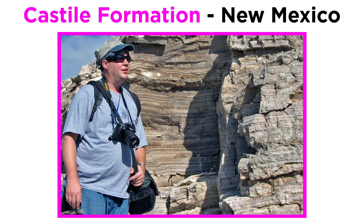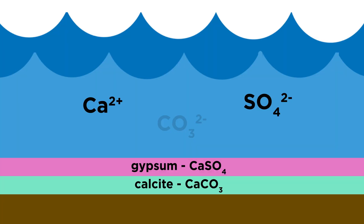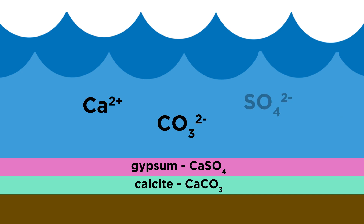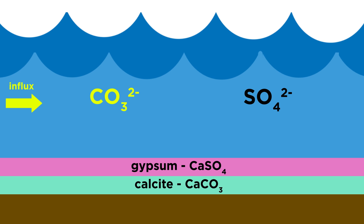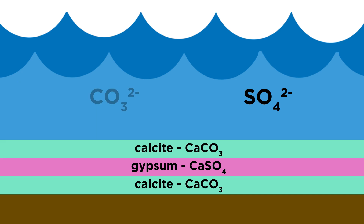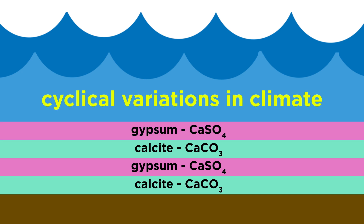Let's now apply this to the Castile formation to explain the cyclic repetition of calcite and gypsum. If we start with calcite, then gypsum would start to form once all the carbonate is exhausted. To start forming calcite again, carbonate would have to be added to the system, which can easily be accomplished by inflow into the basin via rivers and streams. Furthermore, most rivers tend to have much higher amounts of carbonate than sulfate. So each calcite-gypsum bundle probably represents an influx of fresh carbonate-rich water into the basin, followed by evaporation, leading to the depletion of carbonate via calcite crystallization and the subsequent precipitation of gypsum. This is interpreted to represent cyclical variations in climate, with calcite being deposited during wet periods and gypsum during dry periods.